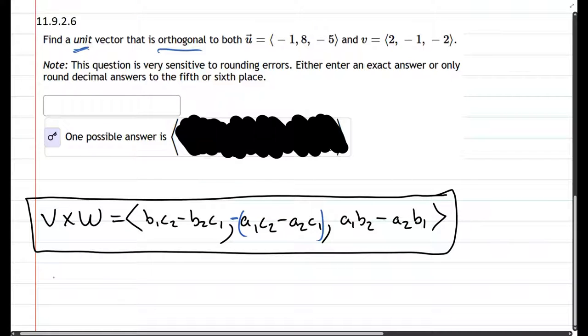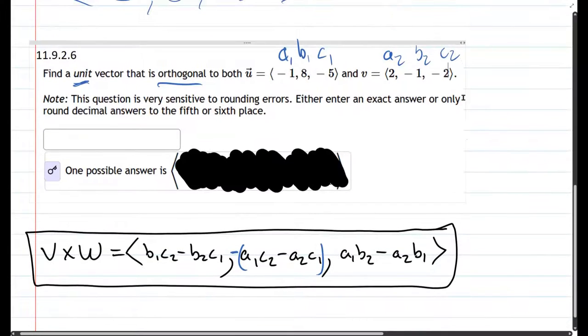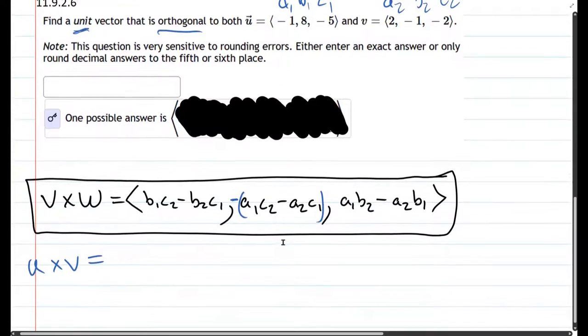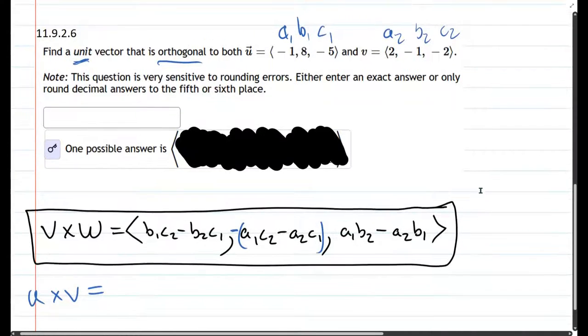So let's go ahead and in this formula we need to decide which one is a1, b1, c1. So I'll just go with the first vector here: a1, b1, c1, a2, b2, c2. And now here we have u cross v.